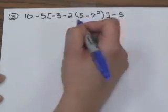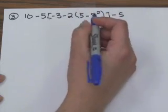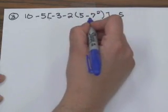You always want to go to the innermost grouping symbol. In this case, it's the 5 minus 7 squared. Let's work this part out first.